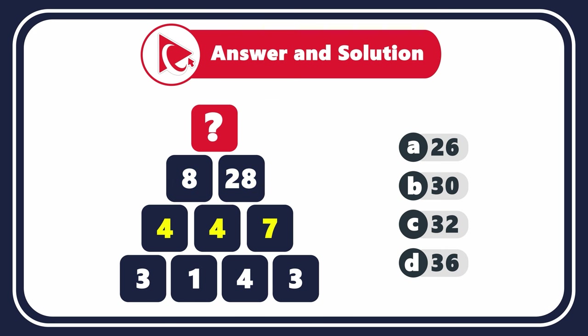Also in the third row: 4 and 7. And in the fourth row: 3, 1, 4, and 3. You need to calculate the missing number and select it out of four possible choices.